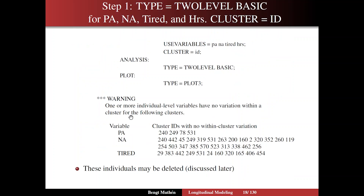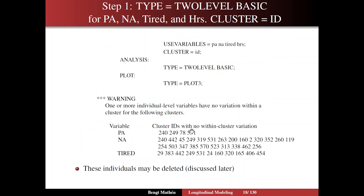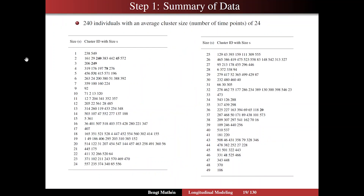We also have ID 249, which has three time points with equal values, and then ID 78 and ID 8 with 4, and ID 531 with 5. So five time points with equal value — those individuals could be safely deleted.